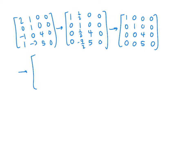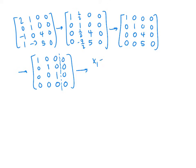A couple more steps: multiply the third row by 1/4, which gives us a 1. The rest of the third column looks good. Then multiply the third row by -5 and add it to the last row — that cancels out the 5. Here's our row-reduced matrix. Translating back into equations: x1 equals 0, x2 equals 0, x3 equals 0. We didn't have any free variables, so all we have is the trivial solution. That's exactly what we need to show that those vectors are linearly independent.